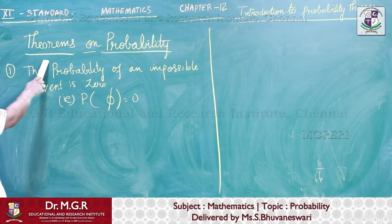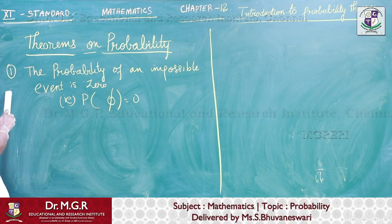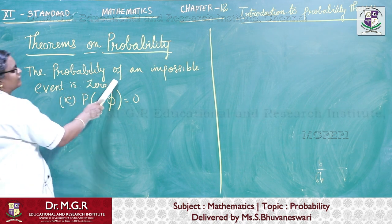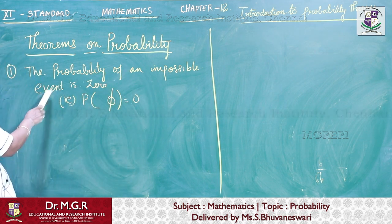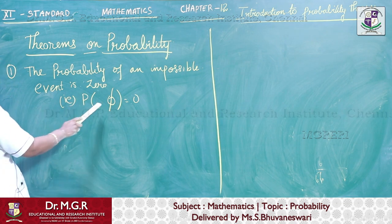Let us start with the theorems on probability. First theorem, the probability of an impossible event is 0, that is P of phi equal to 0.